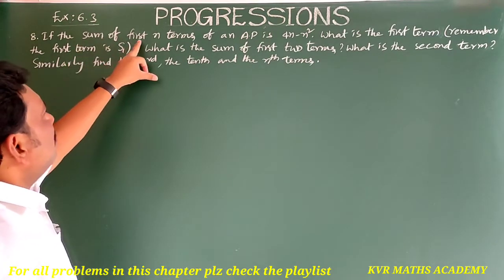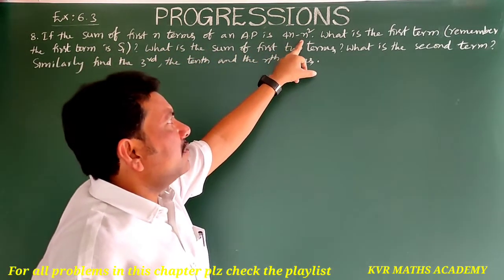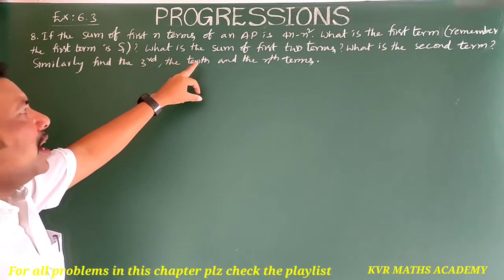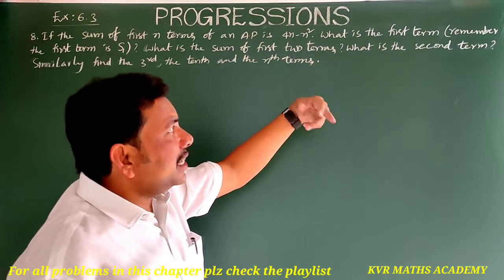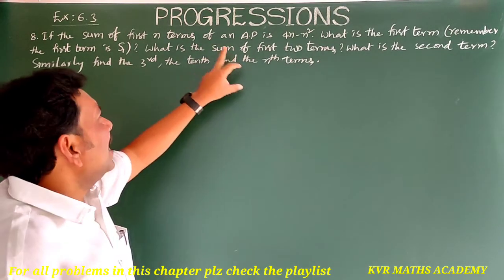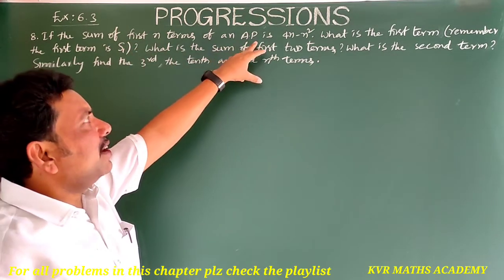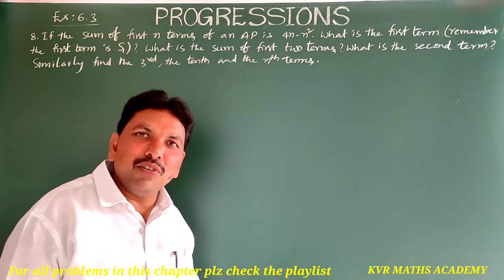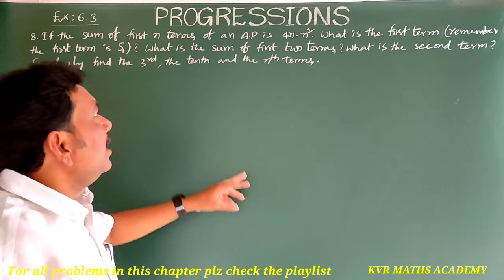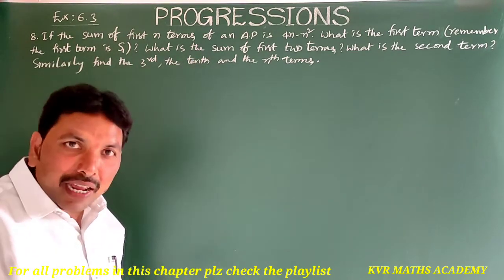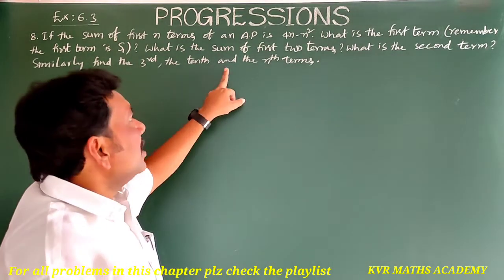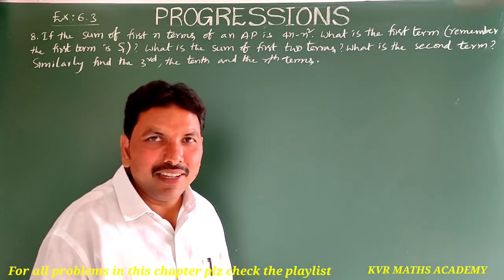Next, eighth question. If the sum of first N terms of an AP is 4N minus N squared, what is the first term? Remember, the first term is S1. What is the sum of first two terms? What is the second term? Similarly, find the third, the tenth, and the Nth terms. Given SN is equal to 4N minus N squared.